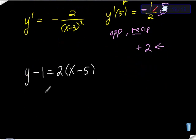So if I simplify all this out, I should get y equals 2x minus 9. Is that right? 2x minus 9, that's what I got.